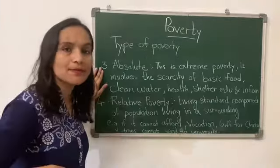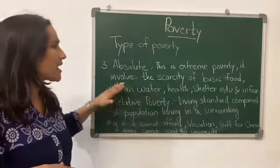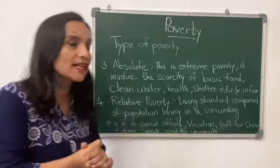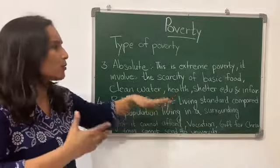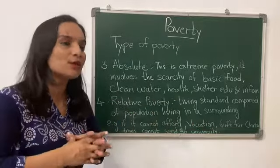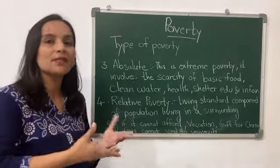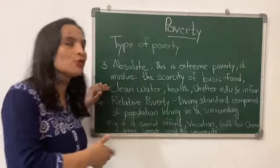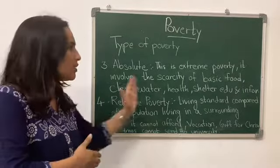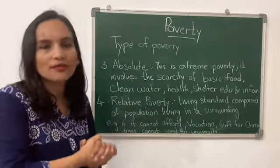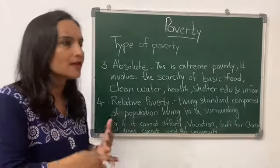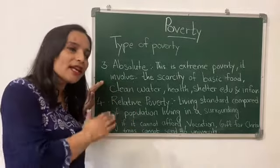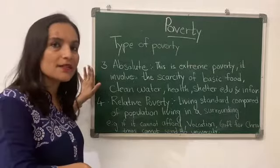The third one is absolute poverty. This is extreme poverty where there is scarcity of basic food which you can't fulfill. You can't get proper healthcare, proper education, or access to information in day-to-day life. Due to contaminated food and water, you can get many diseases like malnutrition and waterborne diseases. This is absolute poverty.